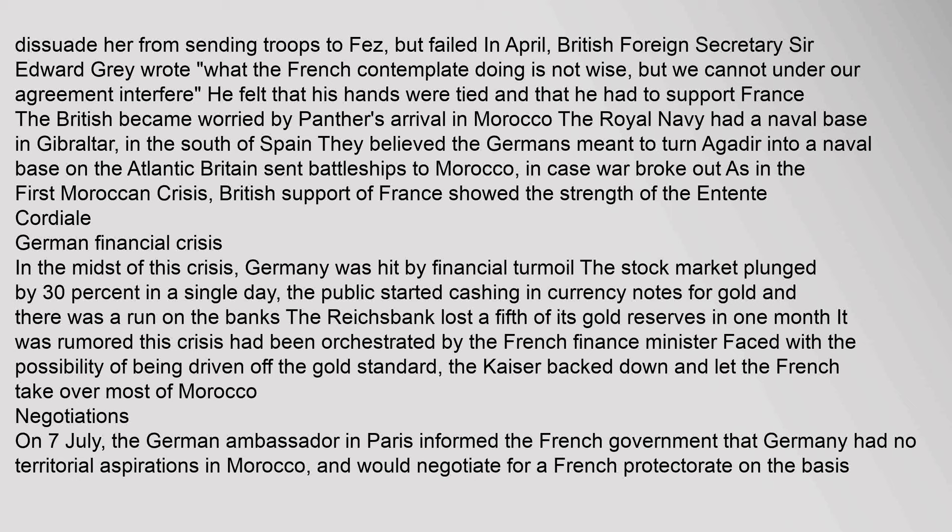On 7 July, the German ambassador in Paris informed the French government that Germany had no territorial aspirations in Morocco and would negotiate for a French protectorate on the basis of compensation in the French Congo region and the safeguarding of German economic interests in Morocco. The German terms, presented on 15 July, contained an offer to cede the northern part of Cameroon and Togoland, but demanded from France the whole of the French Congo from the Sangha River to the sea, to which was later added the transfer of France's right to preemption of the Belgian Congo.